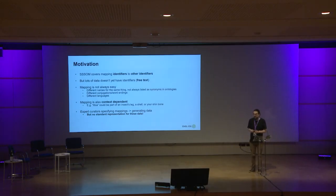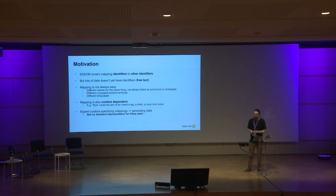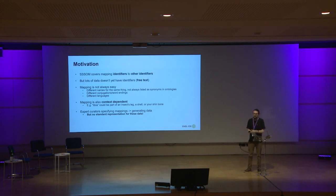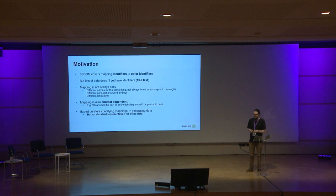At EBI we have expert curators who are specifying these mappings — manually going through and saying this string should map to this term in this ontology. Every time they map something they're generating data, because it's a really important useful bit of information that a human domain expert has created this mapping. But there's no standard representation for this, so we've got databases full of these manually created mappings and we end up writing tools to work with them, but they're all specified individually for each project.